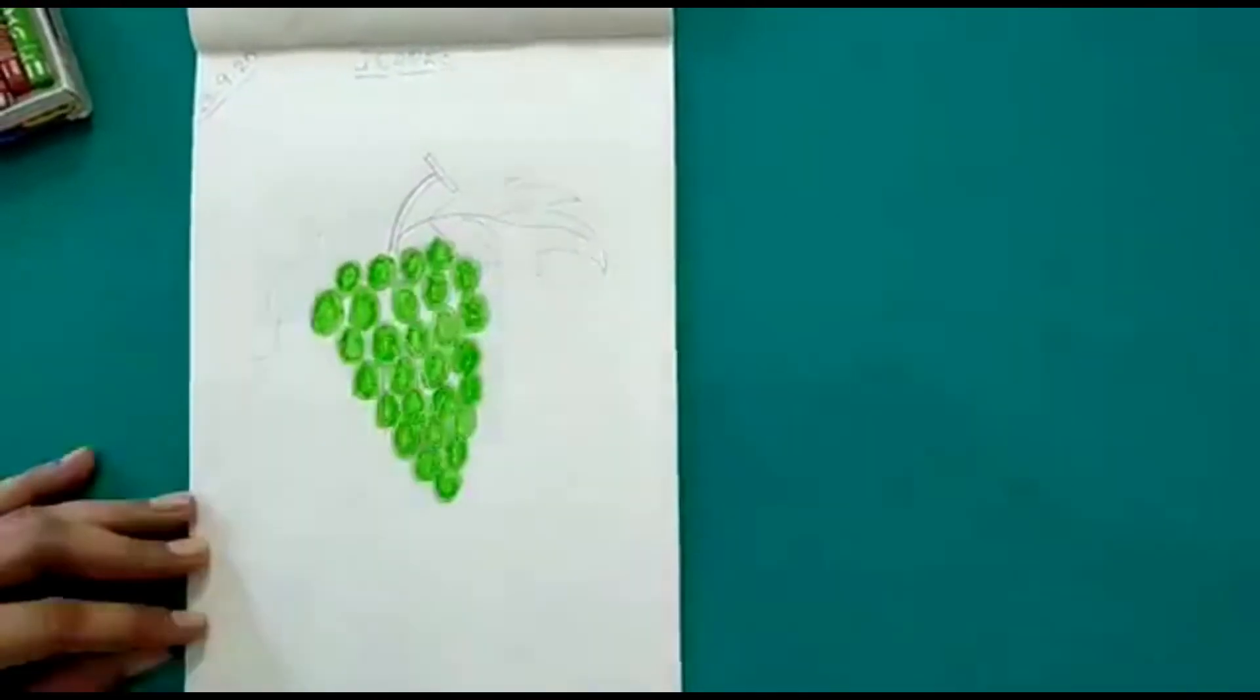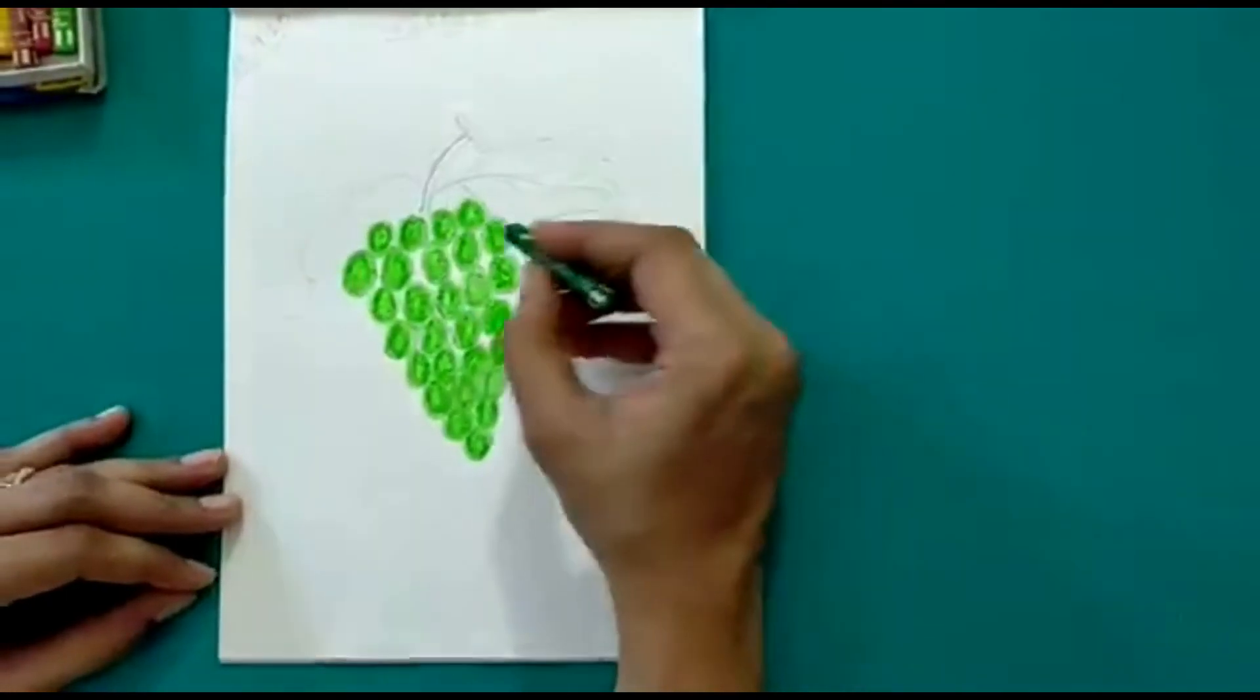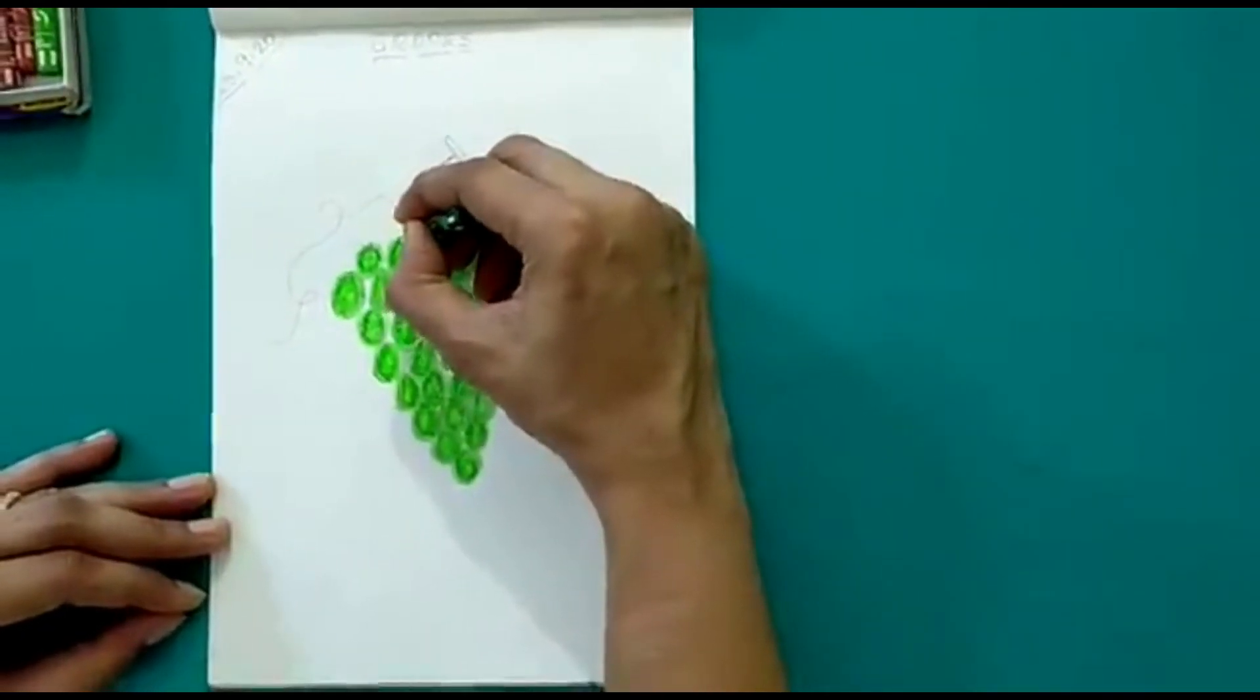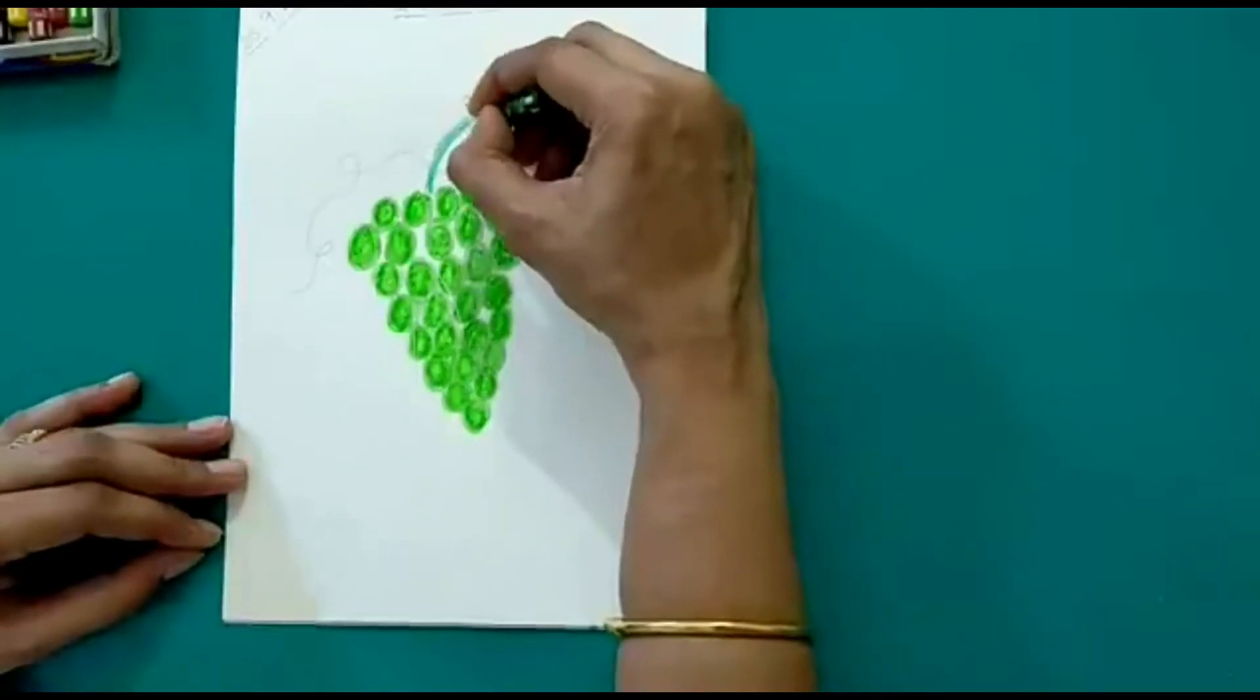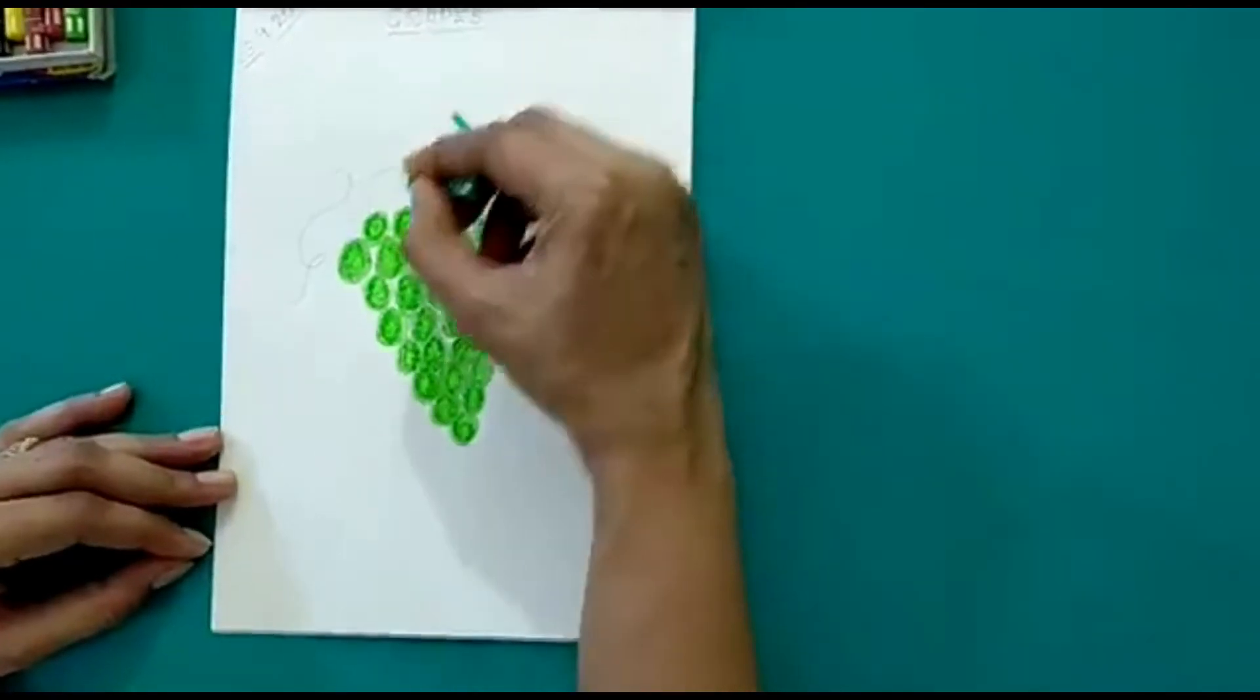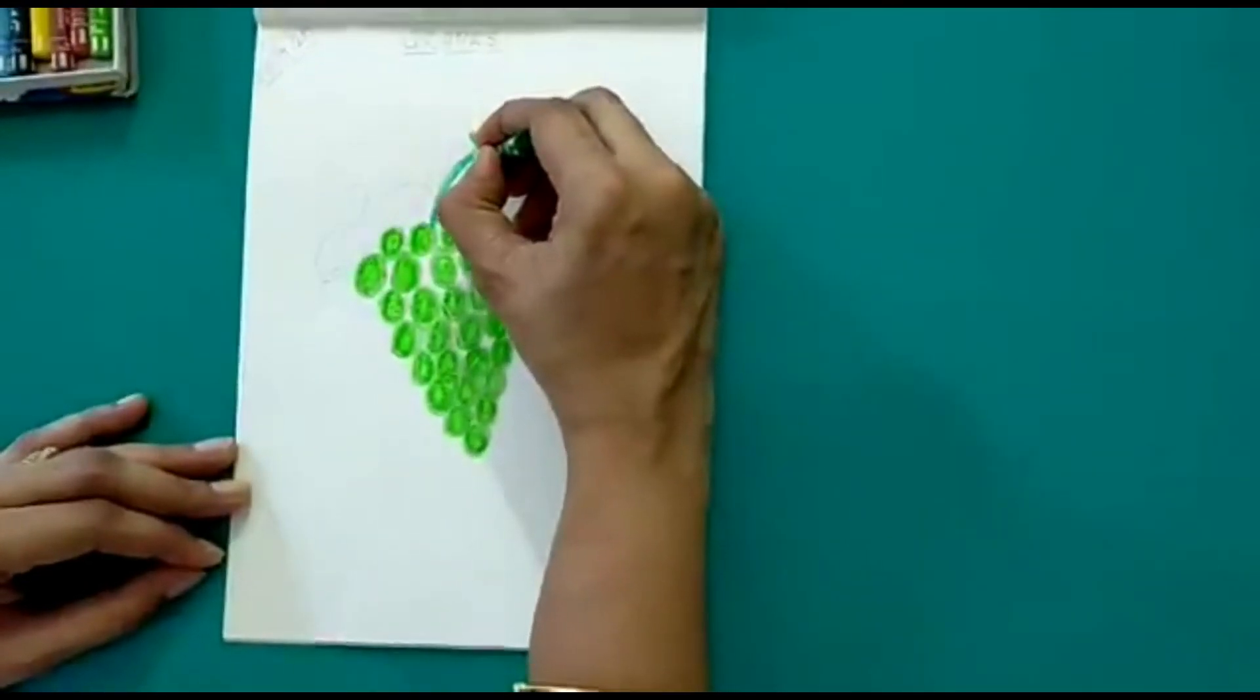Now we have to color the leaf. For that I will be taking a dark green crayon. First let's color the stem. Here I have colored the stem.